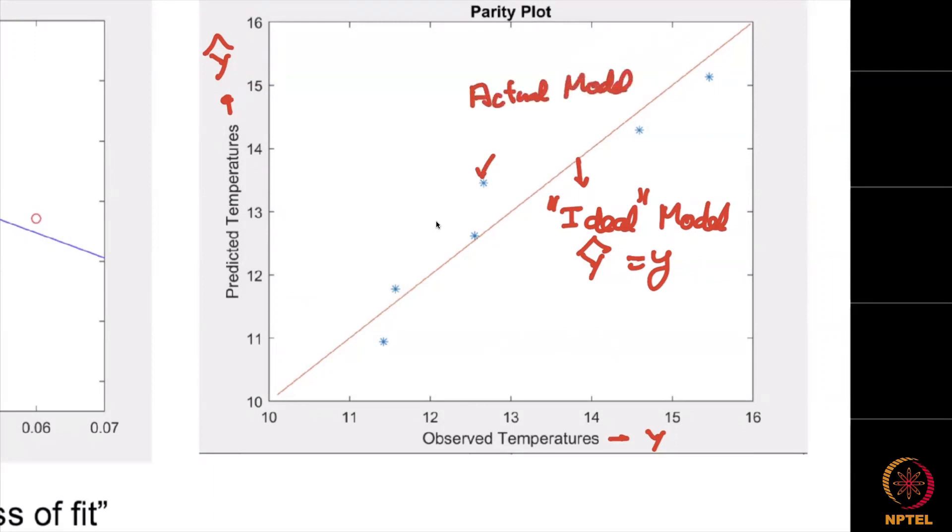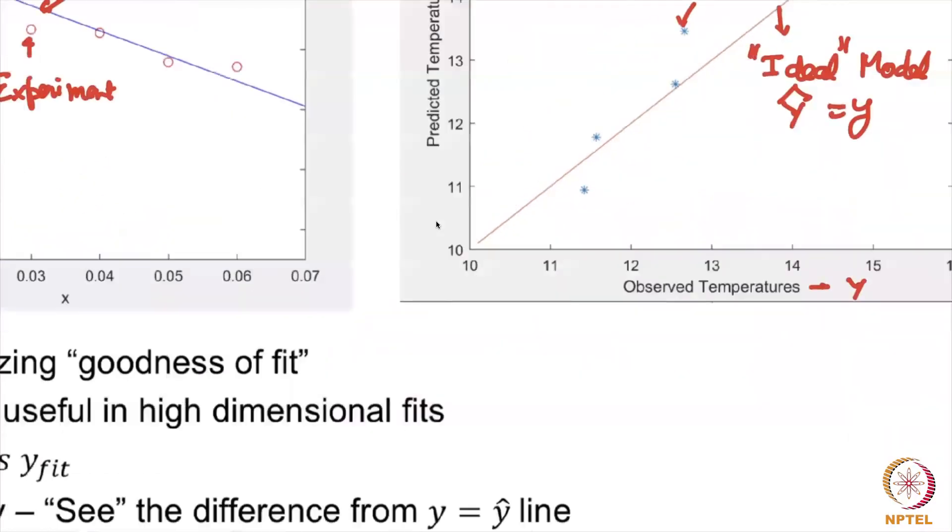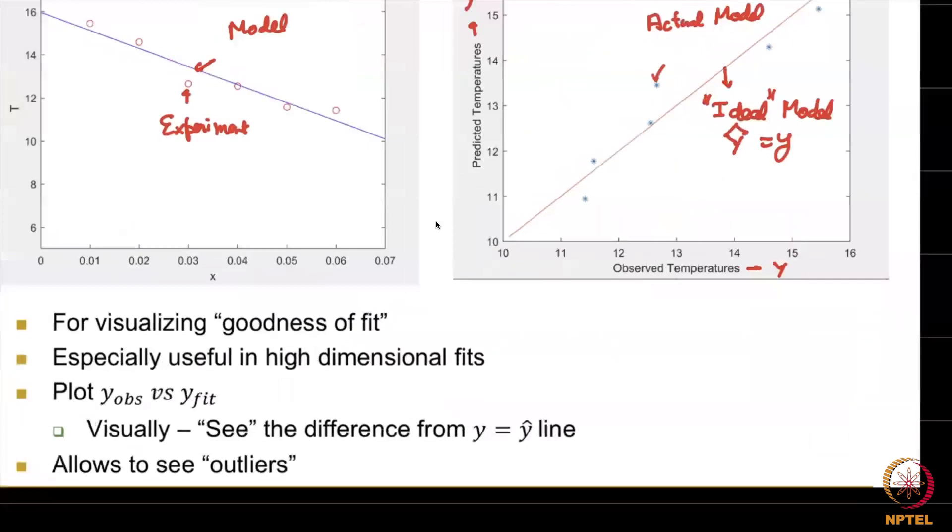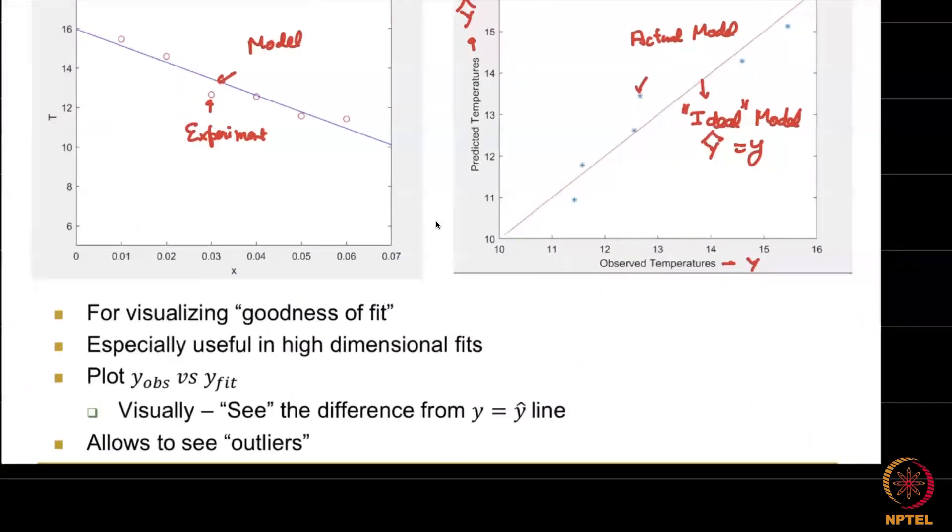So the distance between the ideal model and the actual model tells us how well we are predicting. Now not only that, we can also find out outliers. So the purpose of the parity plot is to visualize goodness of fit. We of course have a single number talking about goodness of fit, but this one visualizes in a very clear way. This is especially useful for high dimensional fits or wherever you have multiple features.